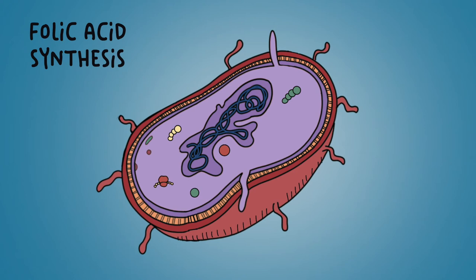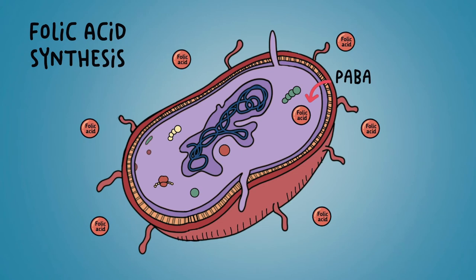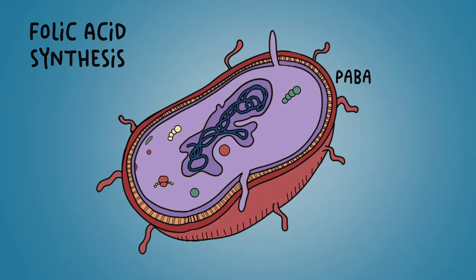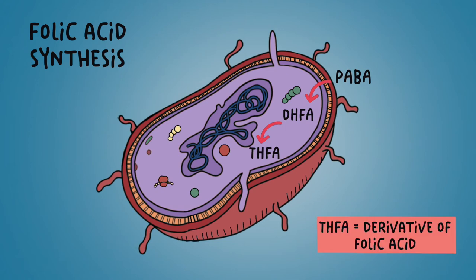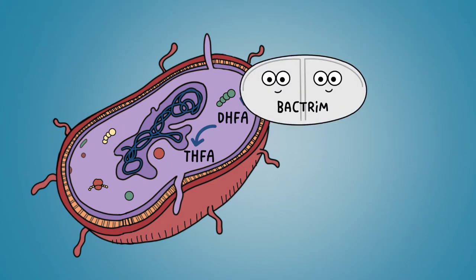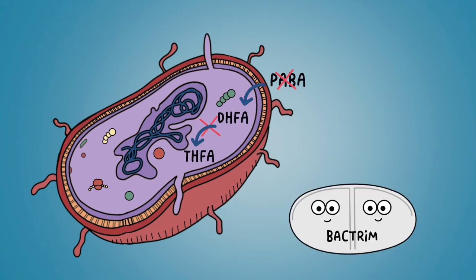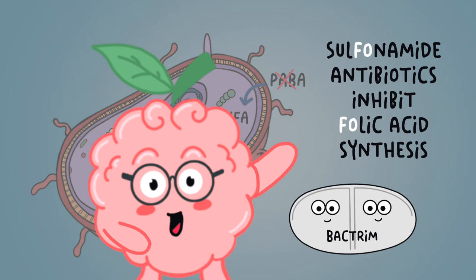Folic acid is synthesized by bacteria from the substrate para-aminobenzoic acid, or PABA, and all cells require folic acid for growth. However, folic acid cannot cross bacteria cell walls by diffusion or active transport. For this reason, bacteria must synthesize folic acid from PABA. Sulfonamide antibiotics such as sulfamethoxazole and trimethoprim work synergistically by interfering with folic acid production within the bacterium. Trimethoprim binds dihydrofolate reductase, and sulfamethoxazole competitively inhibits dihydrofolic acid synthesis by mimicking PABA, preventing the final step of the process. To help you remember this, think of the FO in sulfonamides as inhibiting folic acid synthesis.